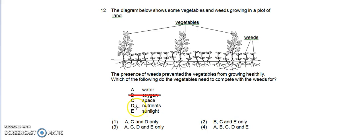D, Nutrients. As the nutrients in the soil are taken up by the vegetables, so do the weeds. So there is competition for nutrients as well.